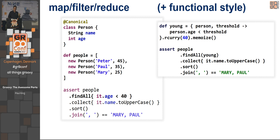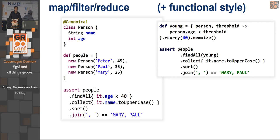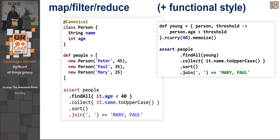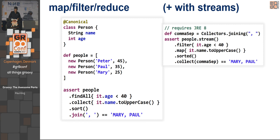We can actually do a whole lot more functional things. Instead of writing findAll with an explicit closure, I can write closures in fancier ways. I create a 'young' closure that allows me to compare a person with any threshold, not just 40. I then do partial application using rcurry — currying in an argument as the second argument on the right-hand side of that closure. I pass in 40 and then memorize it so every time I call that with the same person it remembers what the result was. Now instead of calling findAll with the explicit closure, I just pass in the young closure.